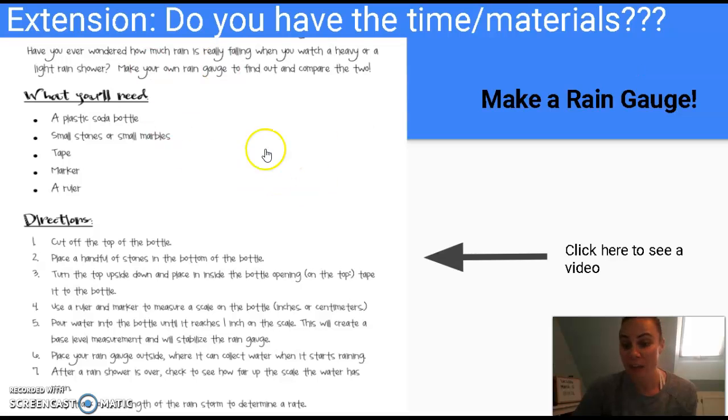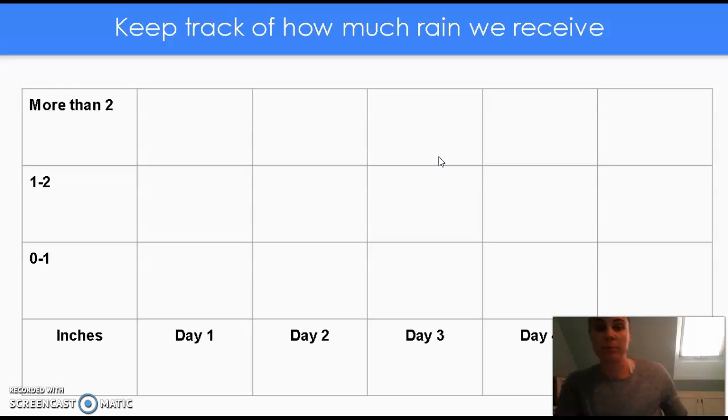If you're able to follow these instructions and create your own rain gauge, then what would be really awesome is if you keep track of how much rain we receive over the next couple of days. You can chart your findings here, and when we return from spring break and begin our units on graphing data, we'll be able to use some of your information to help the entire class better understand the weather in our area.